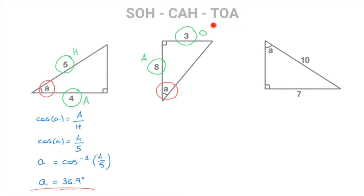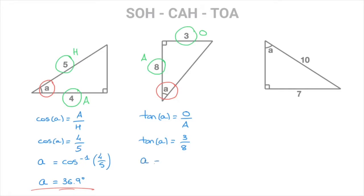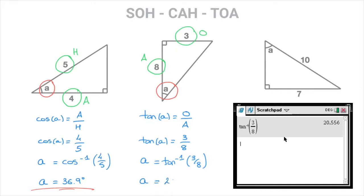It doesn't take us long to see that the only one with O and A is TOA. TOA tells us that the tangent of an angle is equal to its opposite side length divided by its adjacent. So for angle A, we write that tan of A is equal to its opposite divided by its adjacent — replacing O by 3 and A by 8, this becomes tan of A equals 3 over 8. To get the value of angle A, we use the inverse tangent: A equals inverse tangent of 3 over 8, which gives us 20.6 degrees.